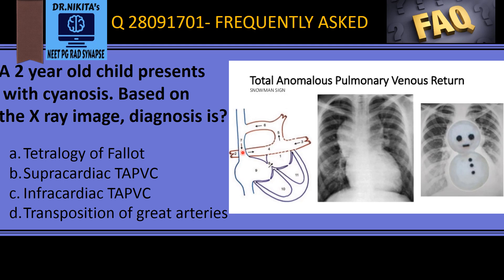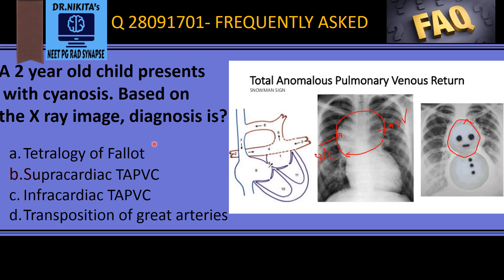From the SVC, blood drains into the right atrium. On the x-ray image, the left prominent side is because of the vertical vein, and on the right side it is because of the SVC. Together, these form the face of the snowman. That is why the snowman's heart sign is seen in supracardiac TAPVC.